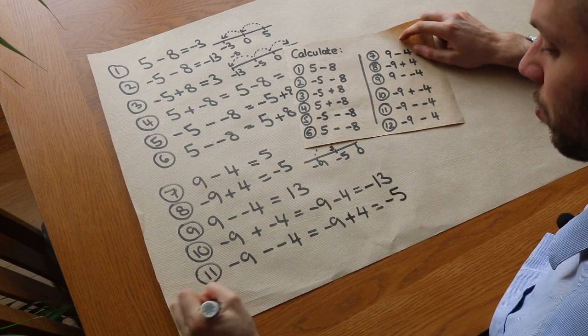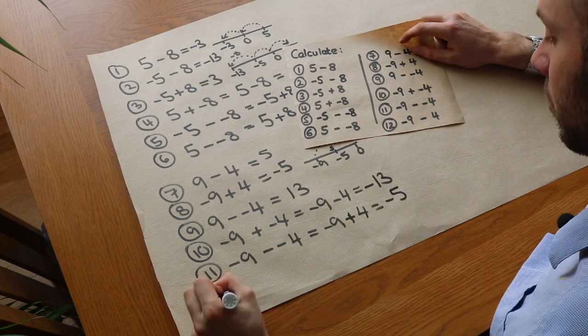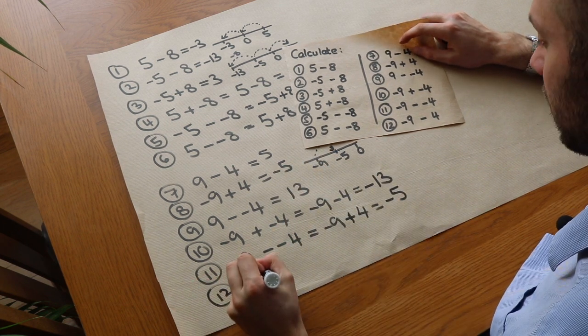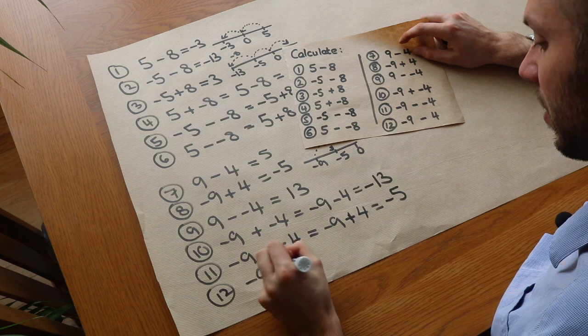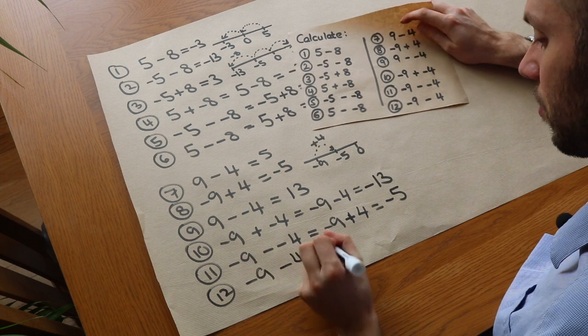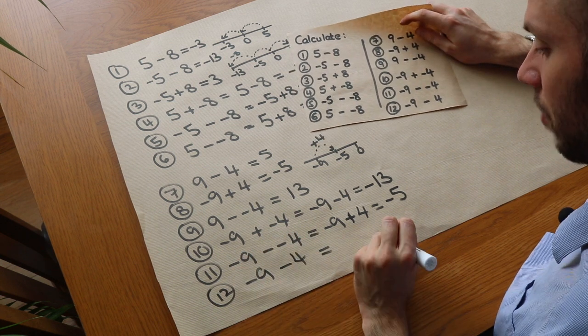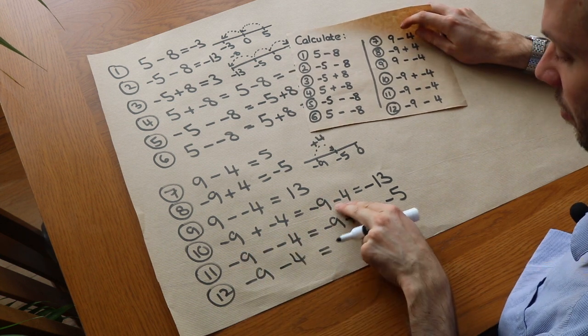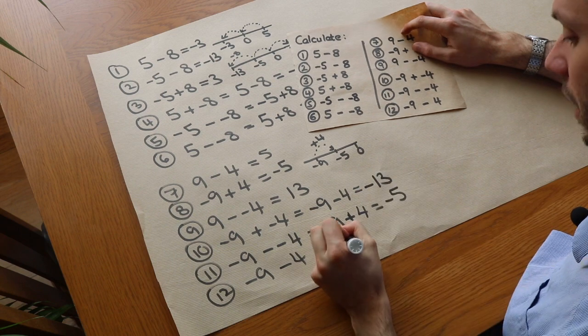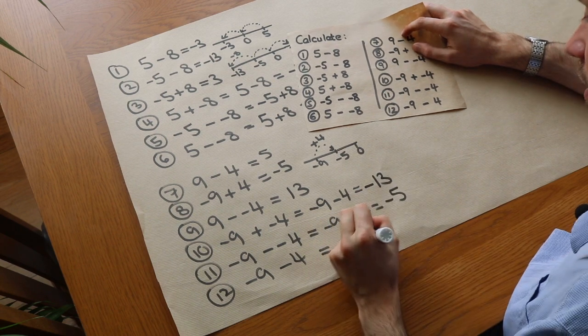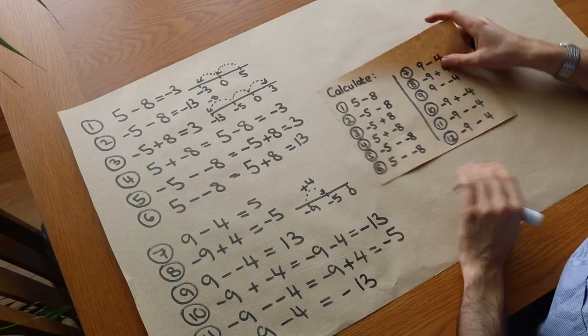Twelve: minus nine subtracting four. That's the same as the earlier example — minus nine subtract four gives us minus thirteen.